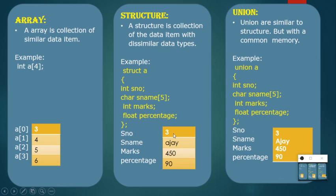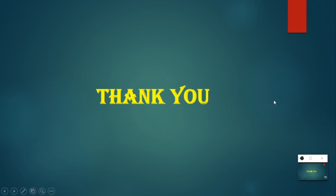In a structure, you can have different data types — for example, integer for serial number, character for student name, integer for marks, and float for percentage. The same applies to union. The key difference: structure stores each member in separate memory, while union stores all members — serial number, name, marks, percentage — in common memory. That's the main difference between structure and union. Thank you friends, keep practicing.